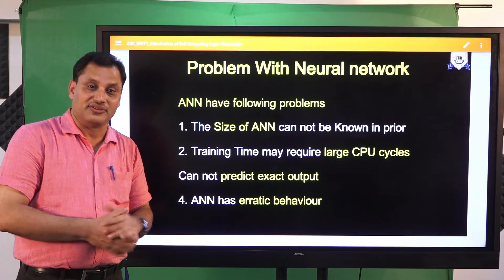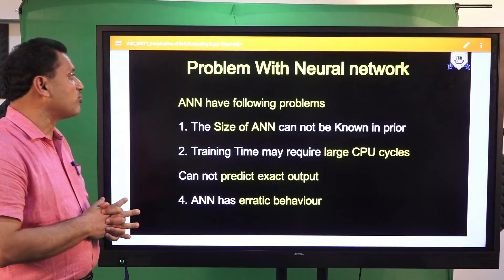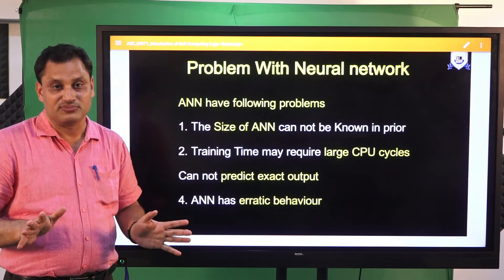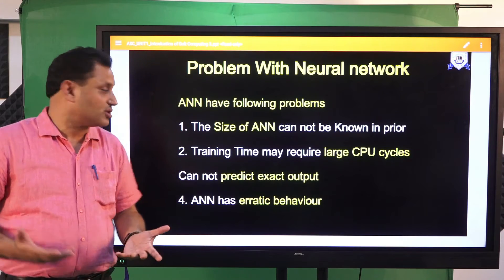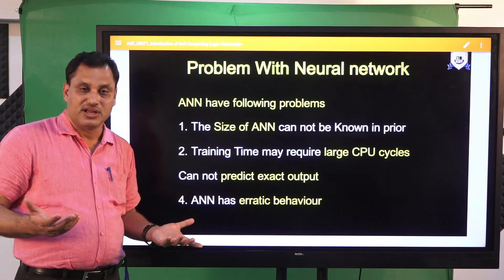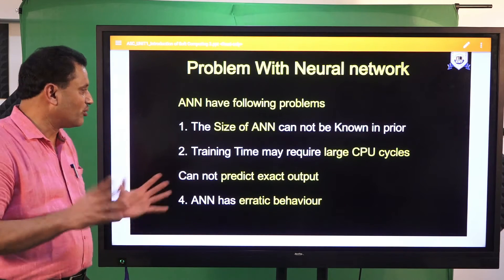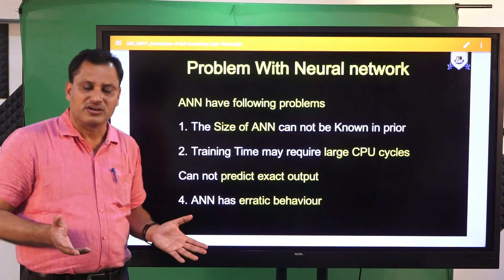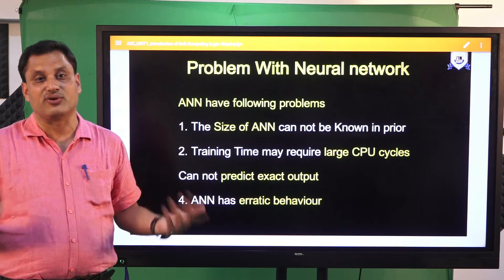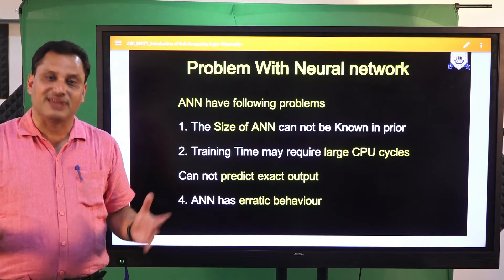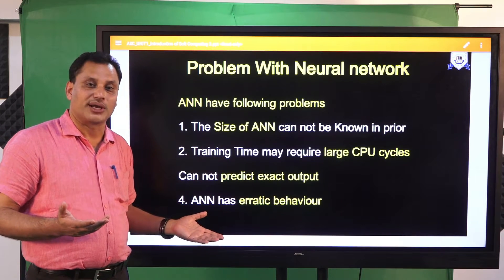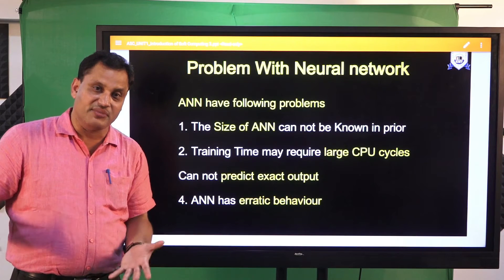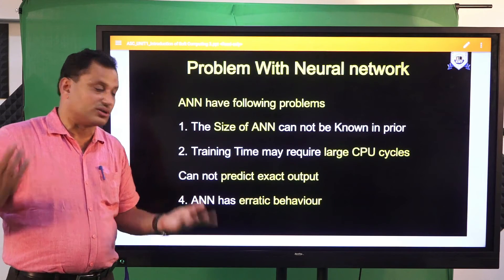Nothing is complete — where there are advantages, there are also problems. A key problem with neural networks is their size. There is no definitive solution; only experimentation provides answers. How many neurons and how many layers will be sufficient — nobody can say; it depends on the problem. Training time may also require large CPU cycles. Just like some children learn quickly while others are slow learners, a neural network may learn in one hour or may require hundreds or even thousands of training cycles.